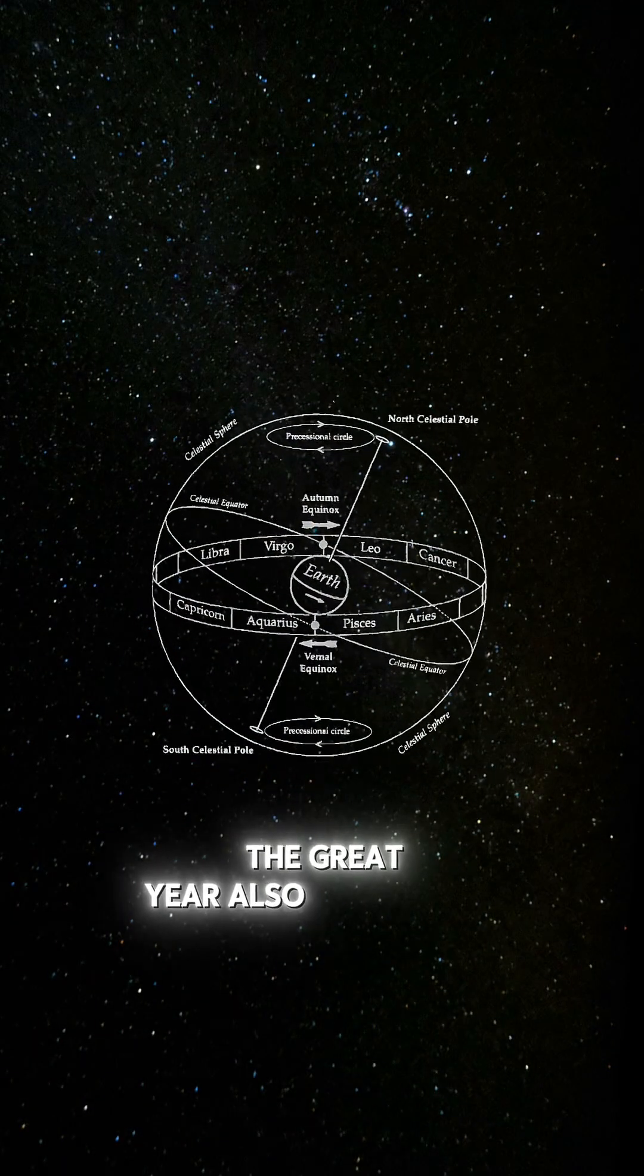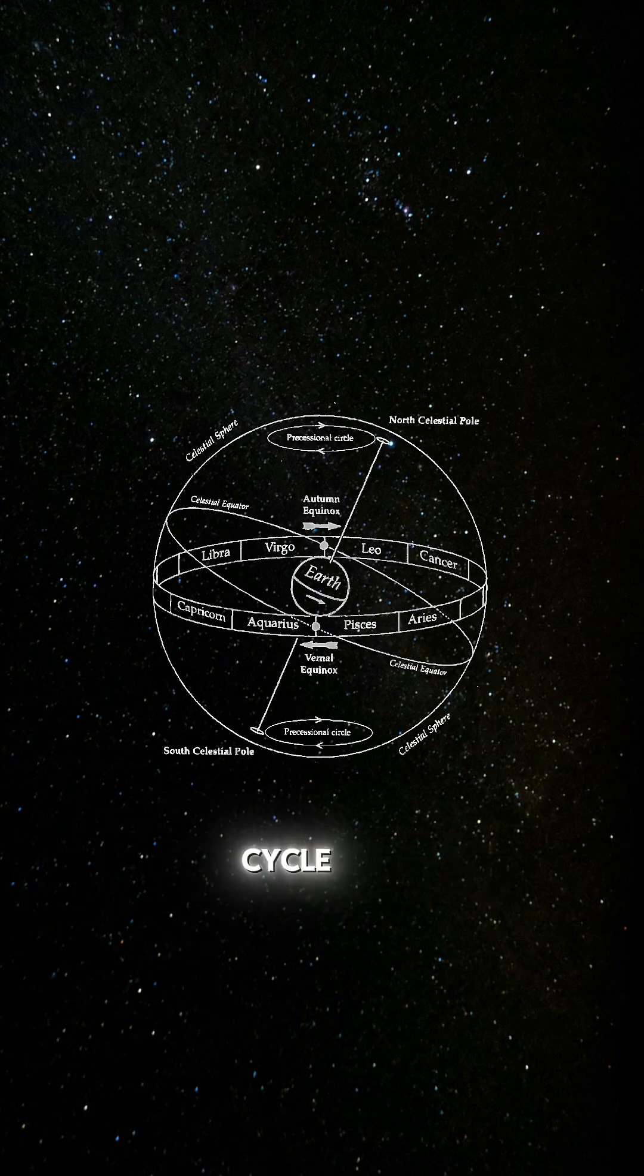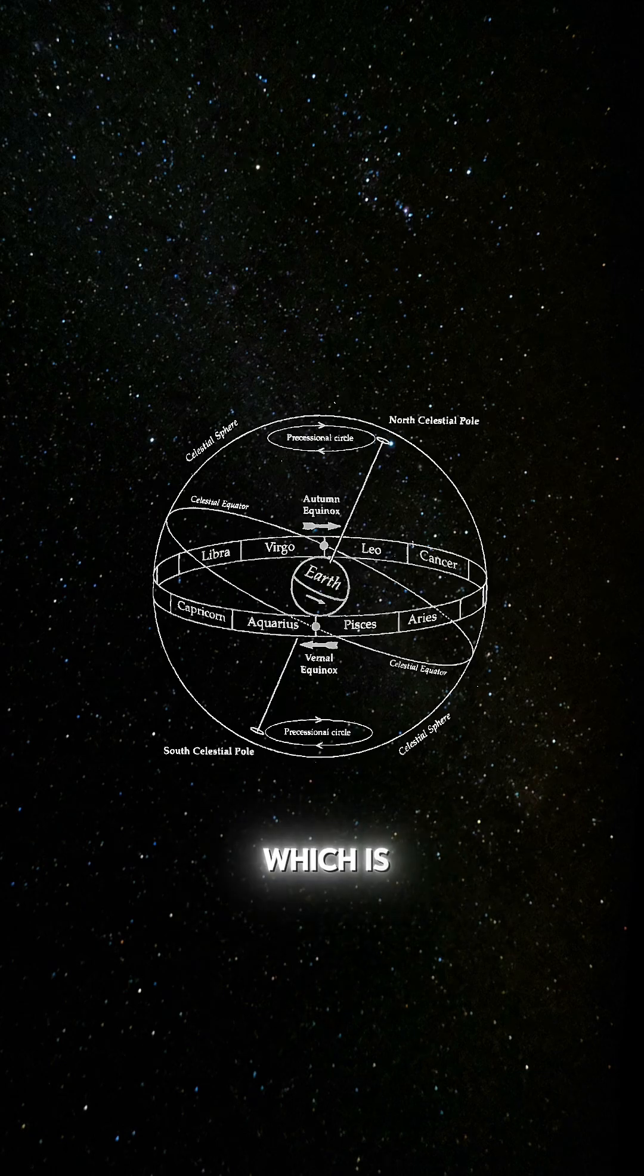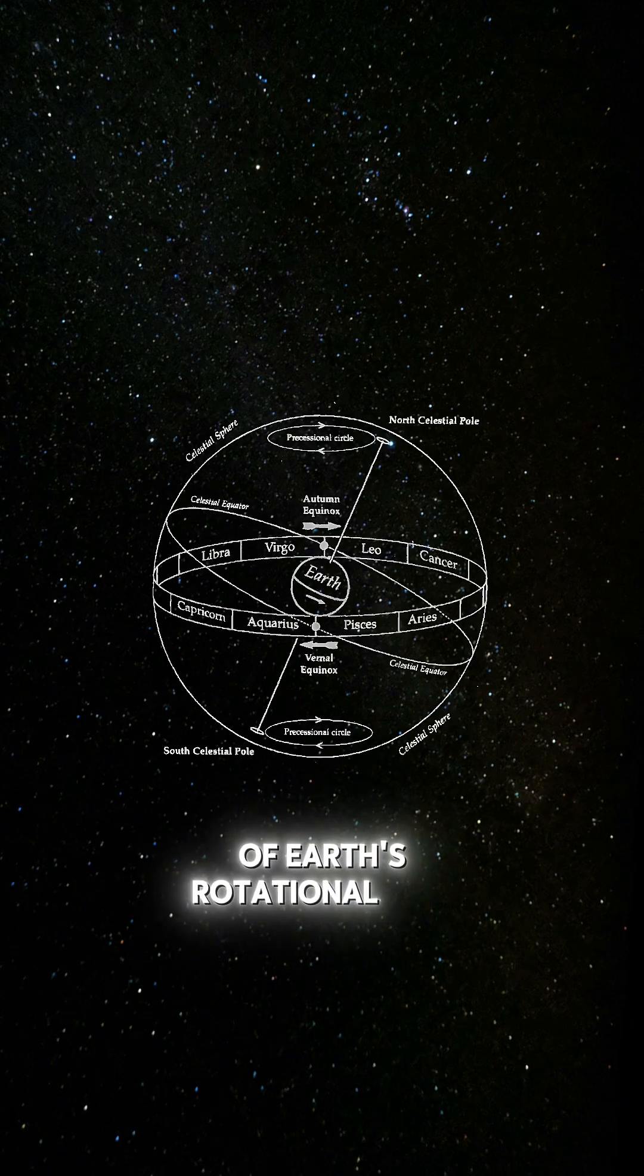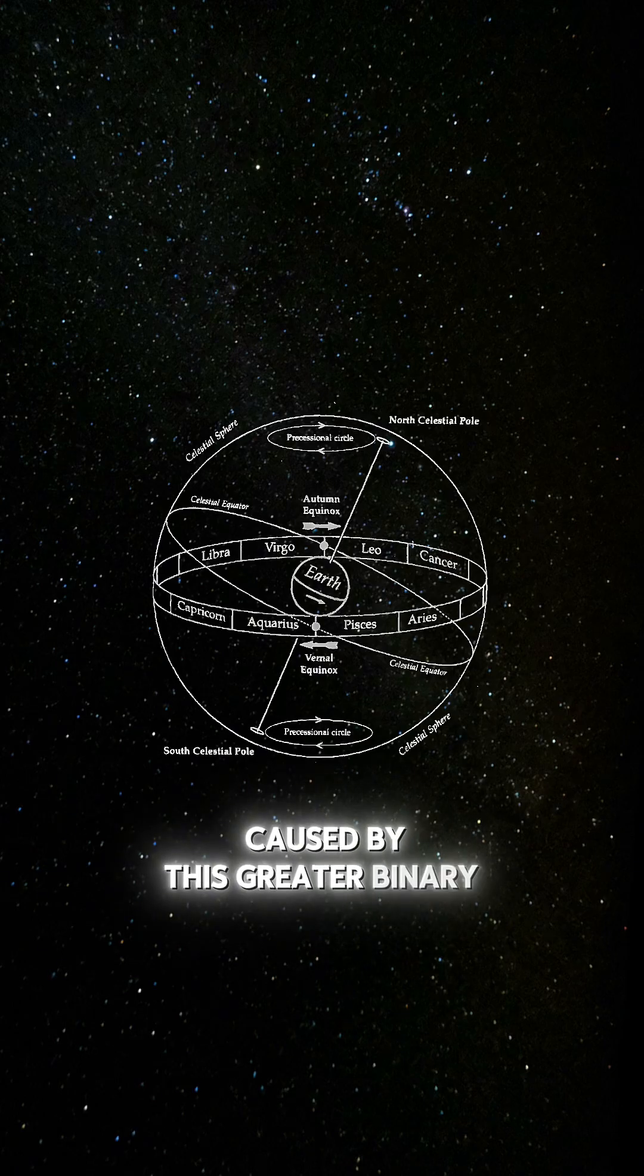The great year also mirrors the zodiacal precession cycle, also known as the precession of the equinoxes, which is the slow wobble of Earth's rotational axis caused by this greater binary cycle.